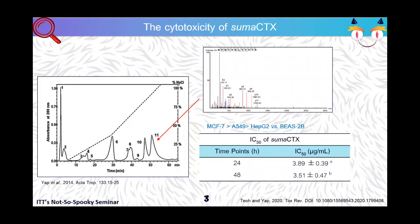We actually checked the cytotoxicity of the SUMA CTX against several malignant cell lines in comparison to normal cell lines. Our results show that MCF-7 was the most susceptible cell line towards SUMA CTX. Furthermore, the toxin also exhibits higher selectivity towards MCF-7 when compared to human bronchial epithelial cells. When we compare the cytotoxicity of SUMA CTX at two different time points, 24 and 48 hours, there was actually no significant difference observed. This suggests that possibly the cytotoxicity of SUMA CTX occurs before 24 hours.